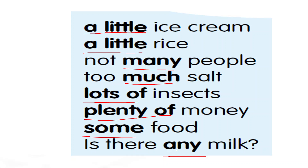Keep it in your mind — those words or those adjectives which are not giving the exact number, we call them as adjectives of quantity. And which words are giving the exact number, those you can call them as adjectives of number. This is the difference between adjectives of number and adjectives of quantity.